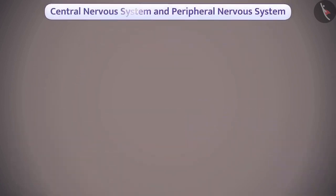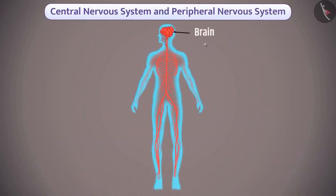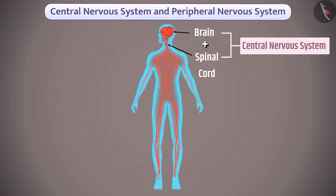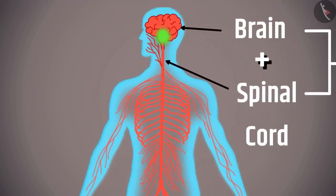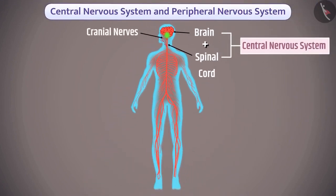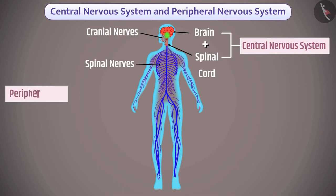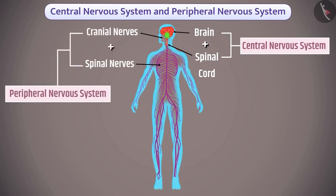The brain and spinal cord together make up the central nervous system, which receives and integrates various information from the body. Various nerves come out of the brain and spinal cord to transmit response signals. Nerves originating from the brain are called cranial nerves, and those from the spinal cord are called spinal nerves. Together they form the peripheral nervous system, which transmits information between the CNS and other parts of the body.